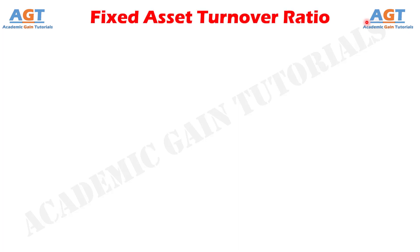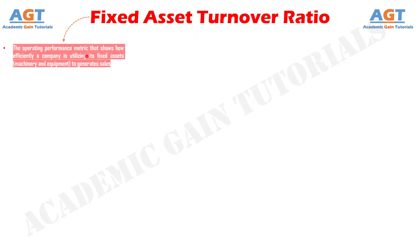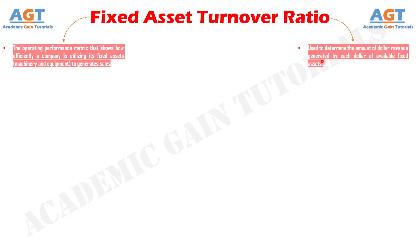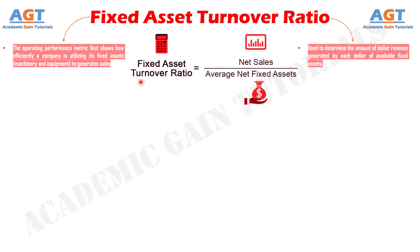The term fixed asset turnover ratio refers to the operating performance metric that shows how efficiently a company is utilizing its fixed assets like machinery and equipment to generate sales. In other words, this ratio is used to determine the amount of dollar revenue generated by each dollar of available fixed assets. The fixed asset turnover ratio formula is expressed as net sales divided by the average value of its net fixed assets, mathematically represented as: Fixed Asset Turnover Ratio = Net Sales / Average Net Fixed Assets.